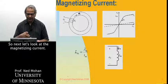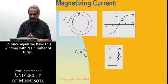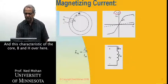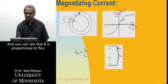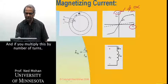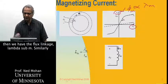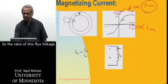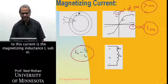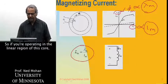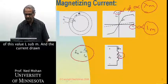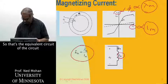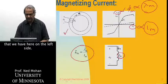Next, let's look at the magnetizing current. We have this winding with N1 number of turns and the BH characteristic of the core. B is proportional to flux if you multiply by area, and if you multiply by number of turns, then we have the flux linkage lambda sub m. Similarly, from Ampere's law, H sub m is proportional to I sub m. So the ratio of this flux linkage to this current is the magnetizing inductance L sub m. If you're operating in the linear region of this core, then we can represent this winding by an inductance L sub m, and the current drawn to support this flux would be I sub m.